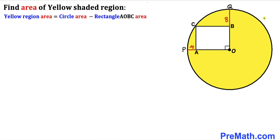Scanning this diagram, we can see that the yellow shaded region area equals the area of the whole circle minus the area of rectangle AOBC.